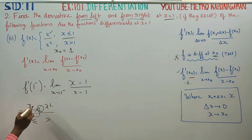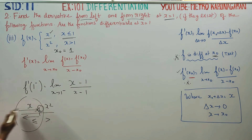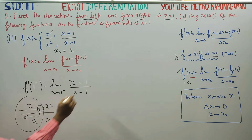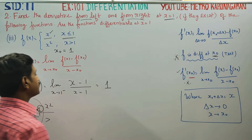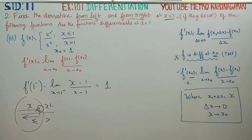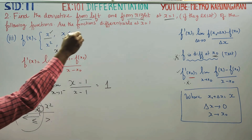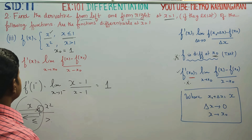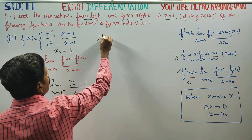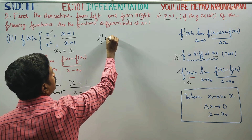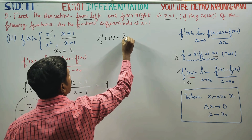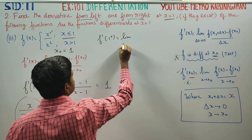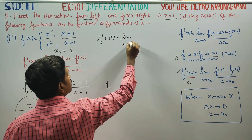The left hand side limit gives us the left derivative. The left derivative must be compared with the right derivative at x equal to 1. Now we find f dash of 1 plus — the right-hand derivative — by taking the limit as x tends to 1 plus.